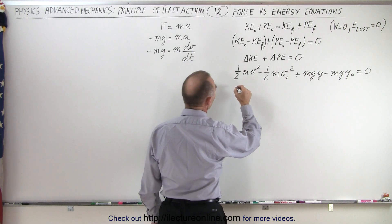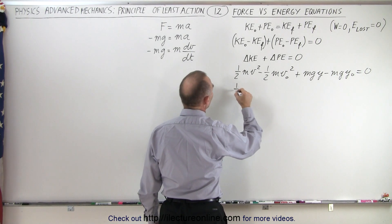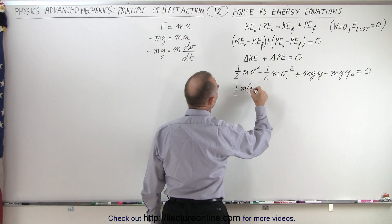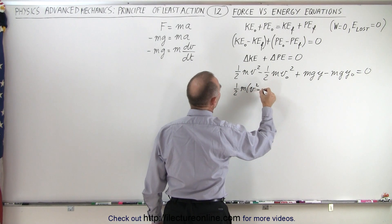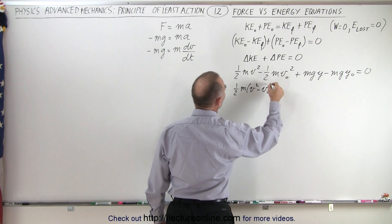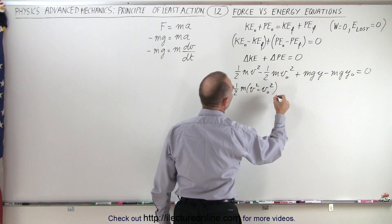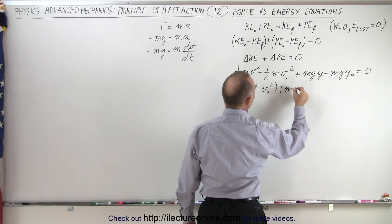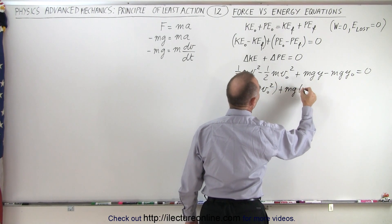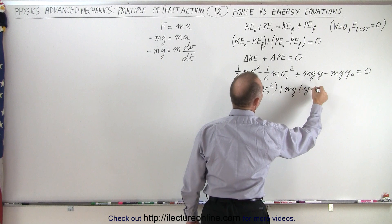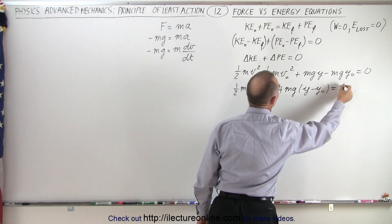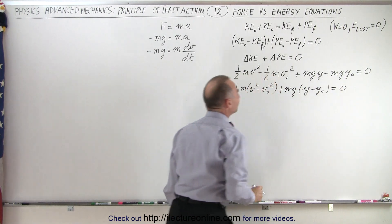We factor out what's common, giving us one-half M times V_final squared minus V_initial squared plus MG times Y_final minus Y_initial equals zero.